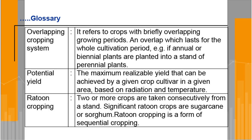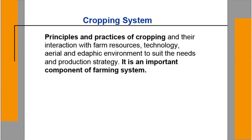Ratoon cropping: two or more crops are taken consecutively from a single stand. Significant ratoon crops are sugarcane and sorghum. Ratoon cropping is a form of sequential cropping. Cropping system refers to principles and practices of cropping and their interaction with farm resources, technology, and aerial and edaphic environment to suit the needs and production strategy. It is an important component of the farming system.